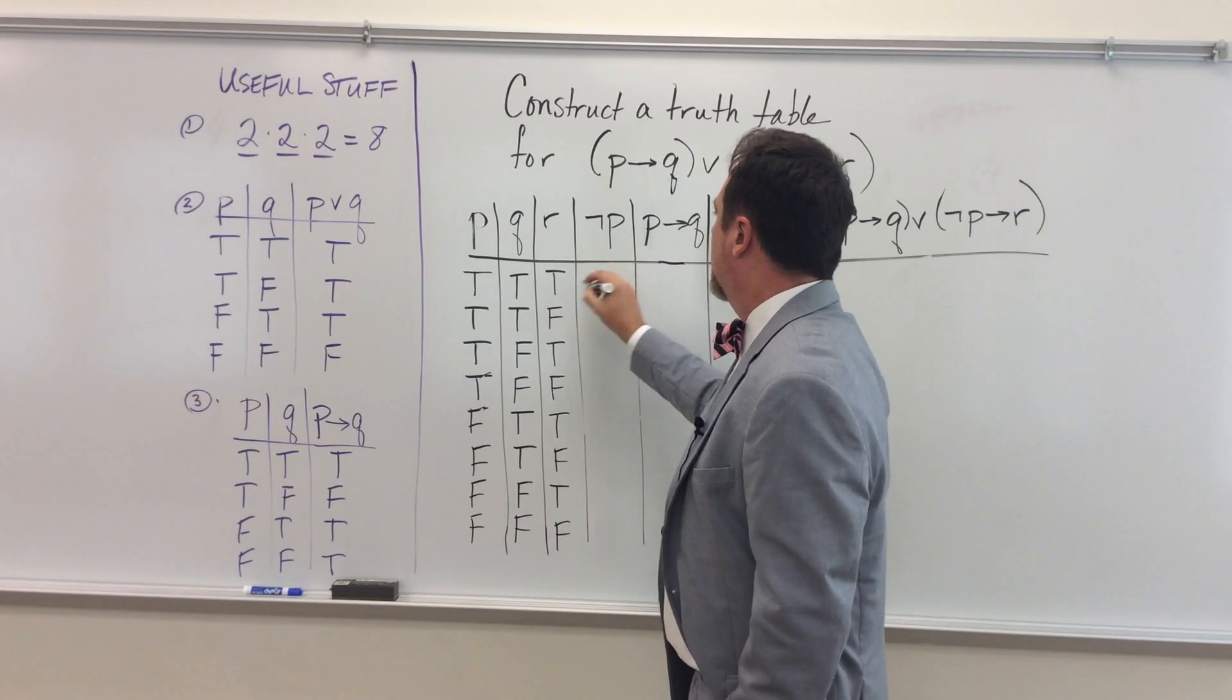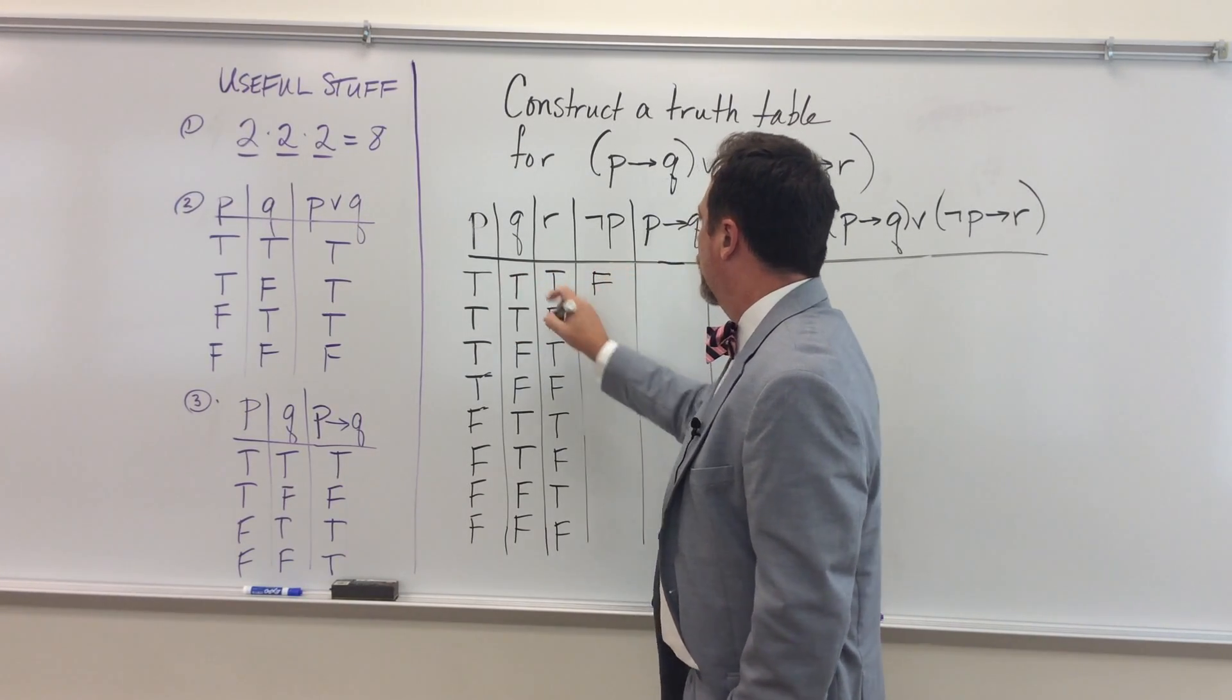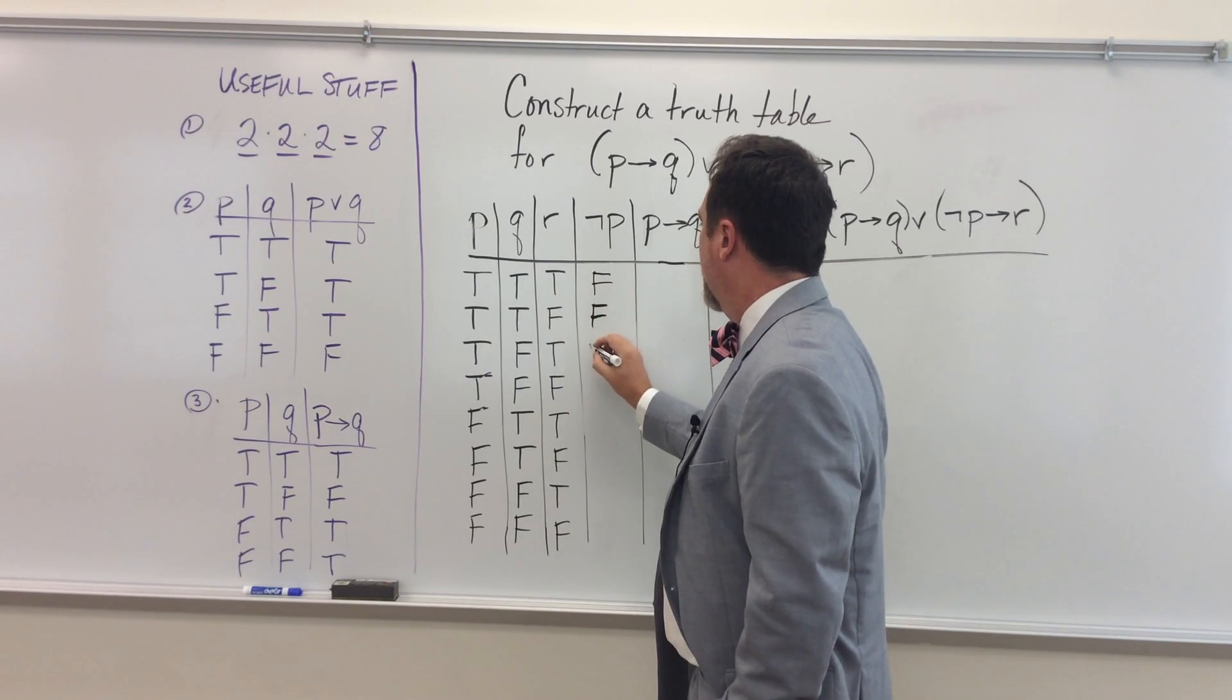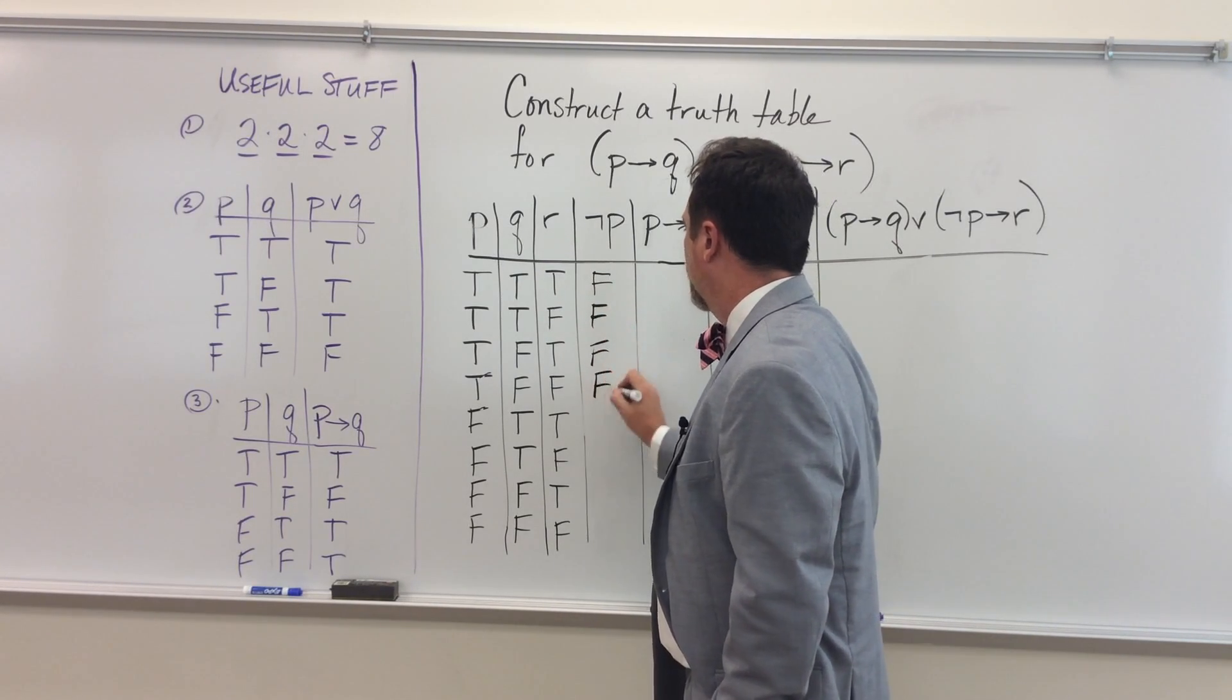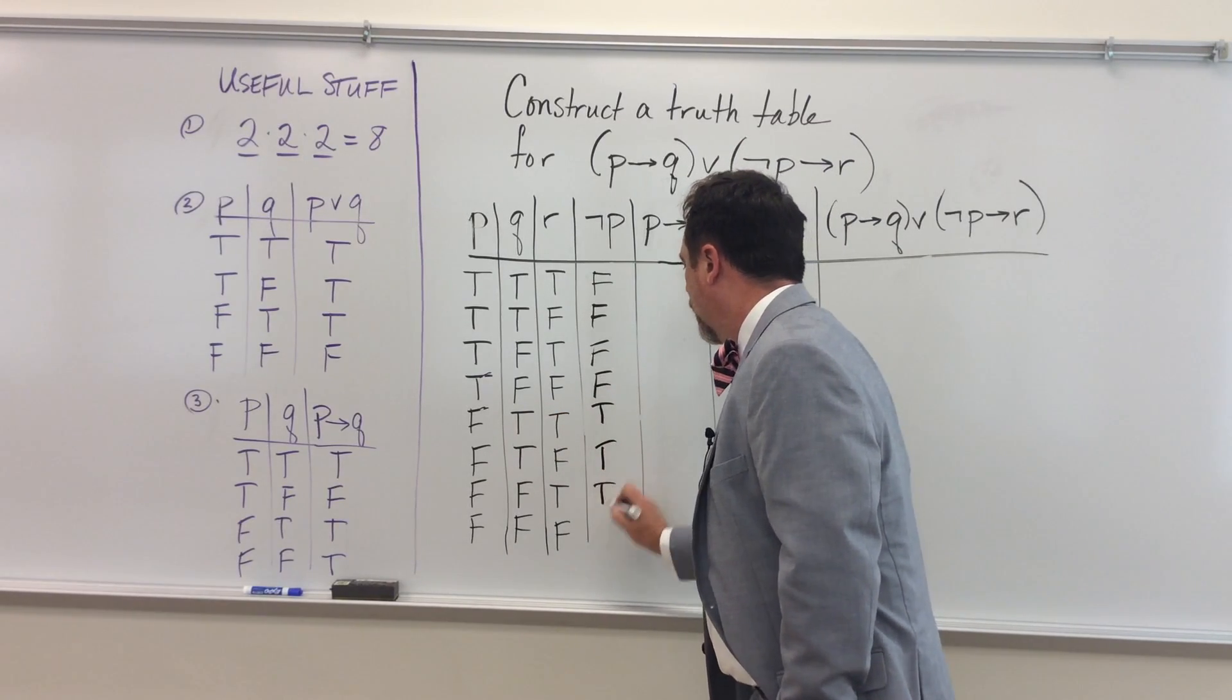So not P is, well, I have my truth values for P over here. So not true is false, and then not true is false four times, right? And then not false has to be true. Of course you knew that. Just saying it because I'm writing it.